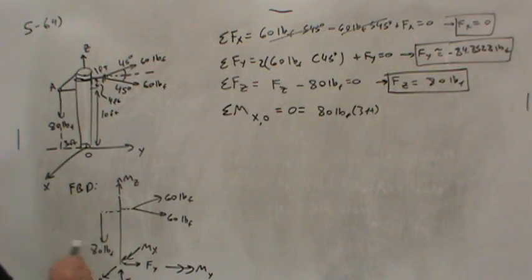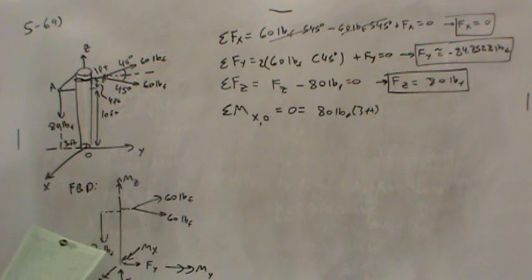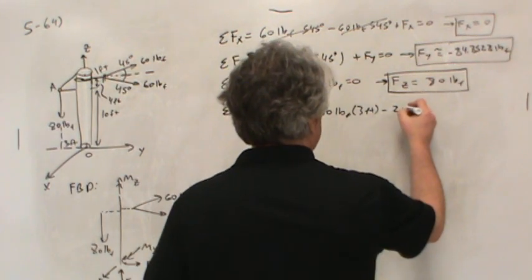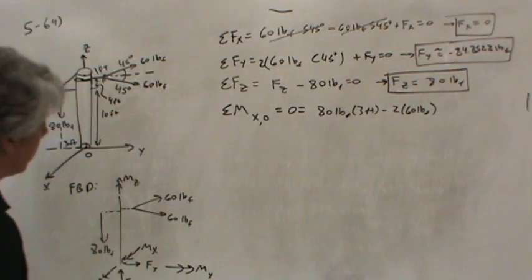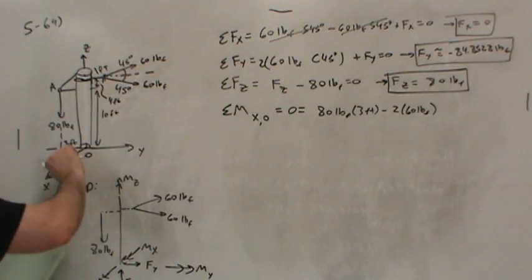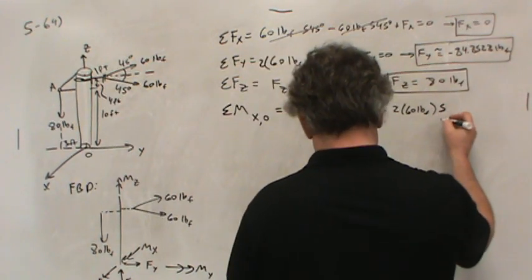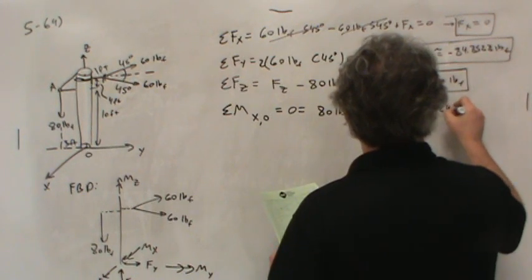Now, that's the moment of this 80-pound force. But notice, there's also a moment due to these two 60-pound forces. And that moment is a negative moment. So, let's write negative. There's going to be two of them. 60 pounds. But I don't want all of the 60 pounds. I only want the piece that's directed along the Y-axis. And that would be the cosine side.